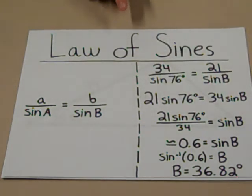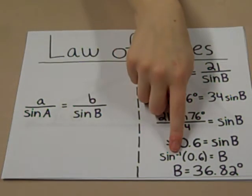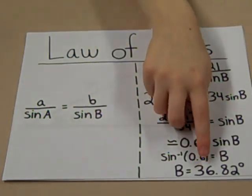Now to solve for B, find the arc sine of B, which is 36.82 degrees.